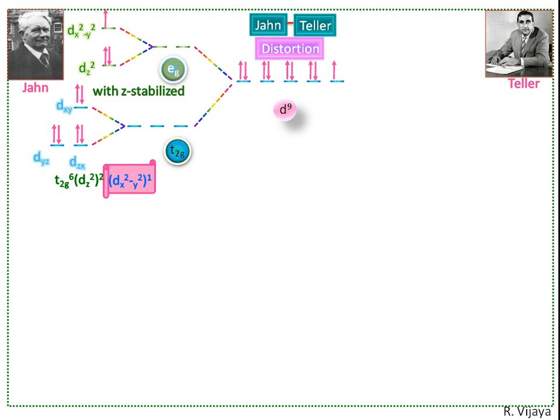Now we see this type of distortion using animation. This is the central metal ion. This is x-axis, this is y-axis, this is z-axis. This is dx²-y² orbital.